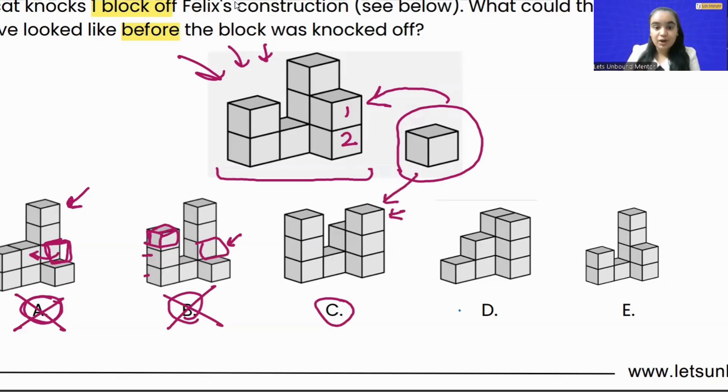But along with it, what they have done is they have again moved one of the blocks from here to here on the opposite side. That means option C is also not correct. What about option D?